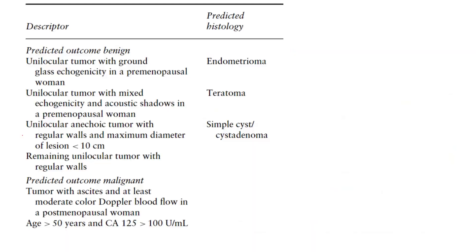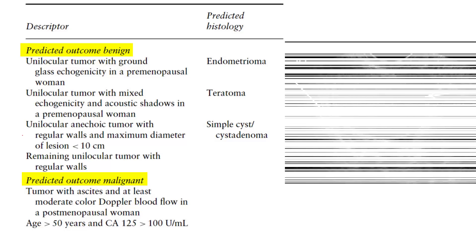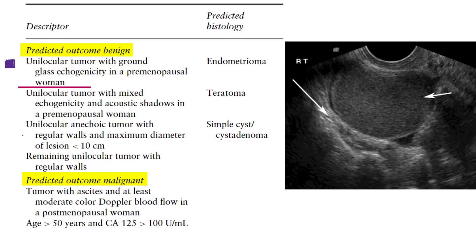What are the simple descriptors? There are predicted outcome benign and predicted outcome malignant. A unilocular tumor with ground glass echogenicity in a premenopausal woman is suggestive of endometrioma.